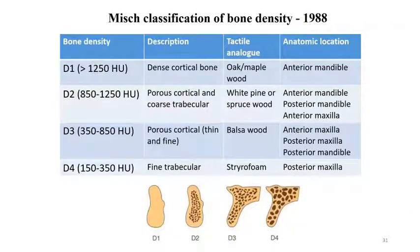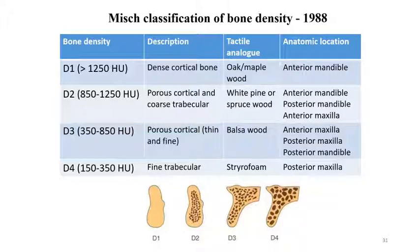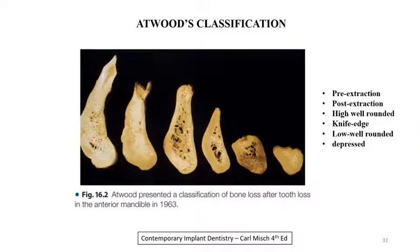Coming to Misch classification of bone density: D1 is dense cortical bone, seen mostly in the anterior mandible. D2 is porous cortical and coarse trabecular bone, seen mostly in the anterior mandible, posterior mandible, and anterior maxilla. D3 is porous cortical bone, seen mostly in the anterior maxilla, posterior maxilla, and mandible. D4 is fine trabecular bone, seen mostly in the posterior maxilla. The Atwood classification includes: pre-extraction, post-extraction, high well-rounded, knife edge, low well-rounded, and depressed.